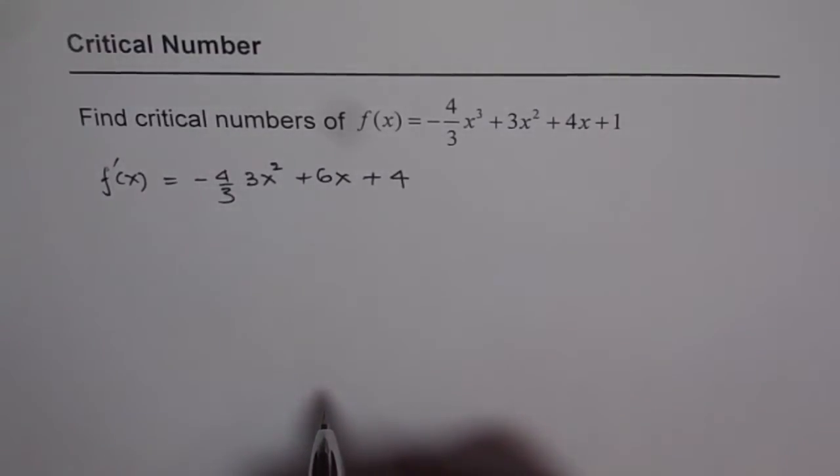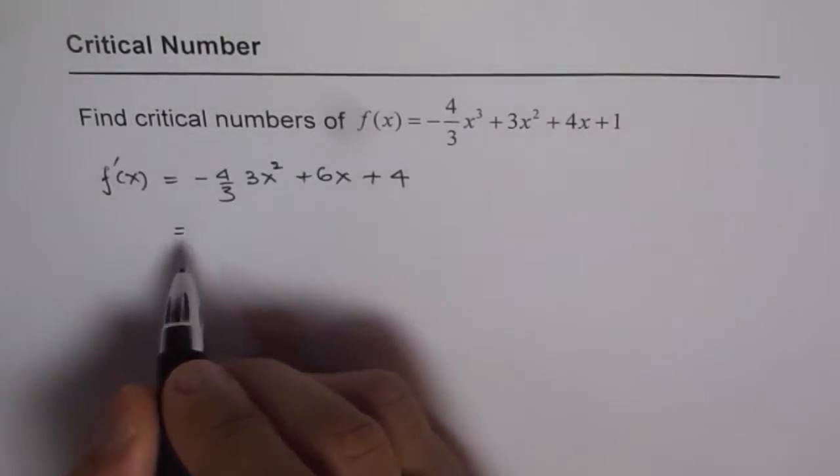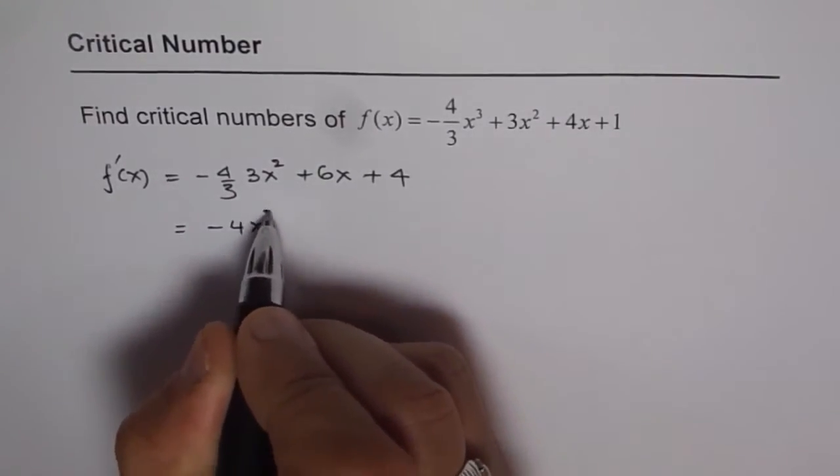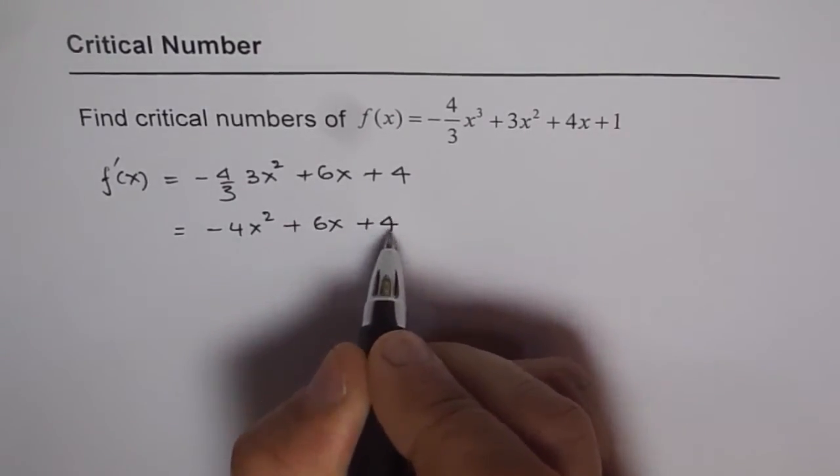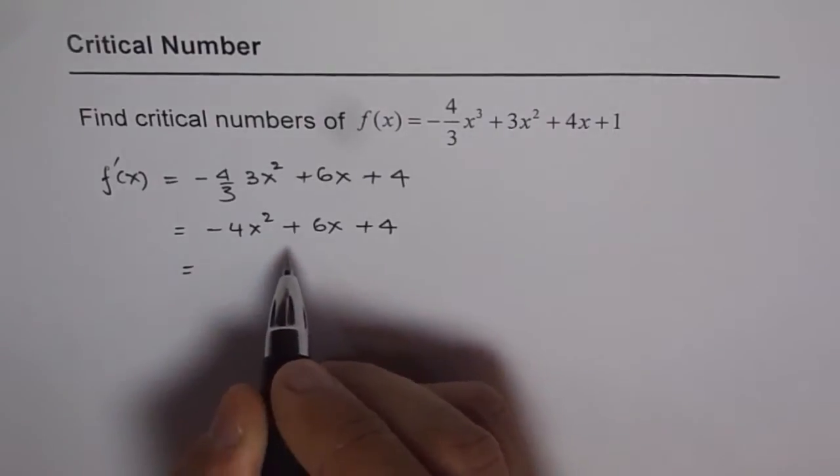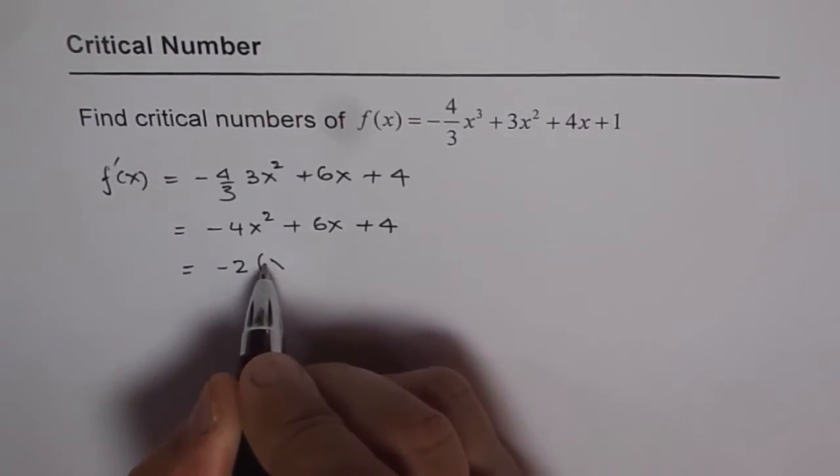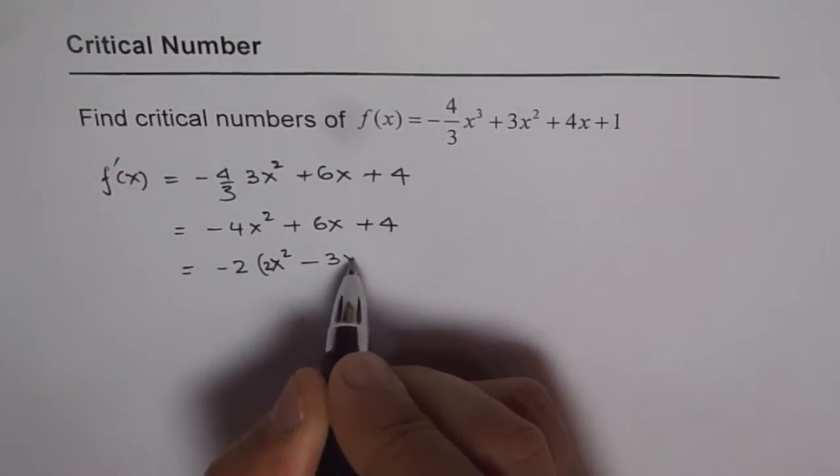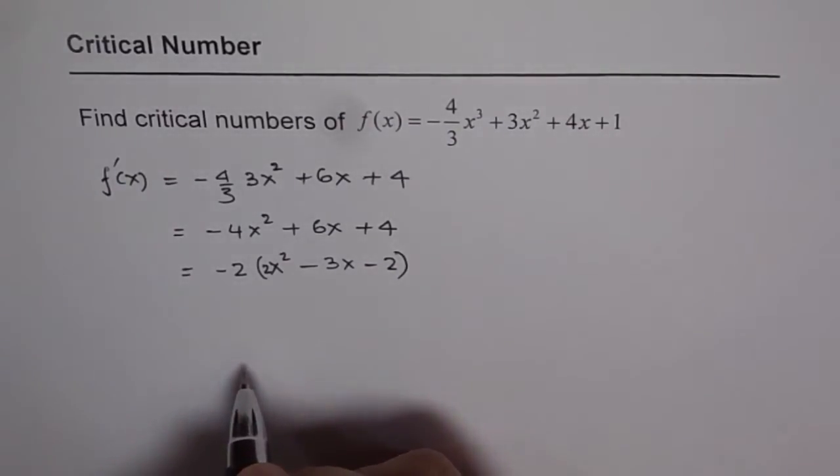Let's try to factor this. We can simplify first. The 3s cancel out, giving us -4x² + 6x + 4. Now we can factor out -2, getting -2 times (2x² - 3x - 2).